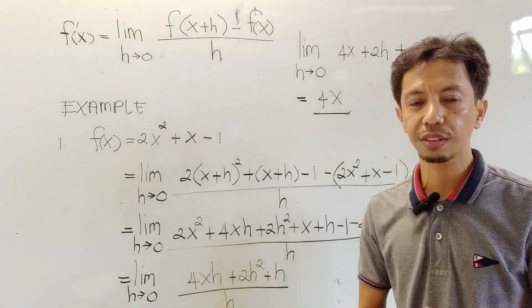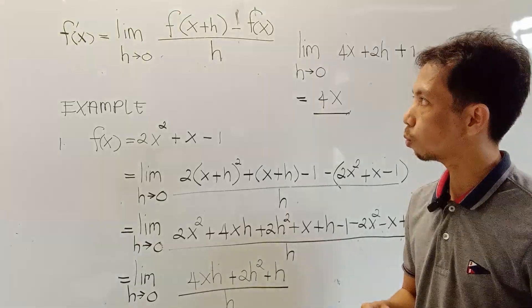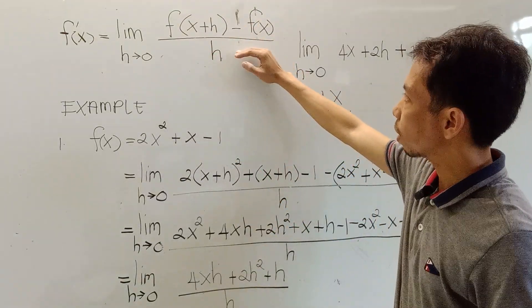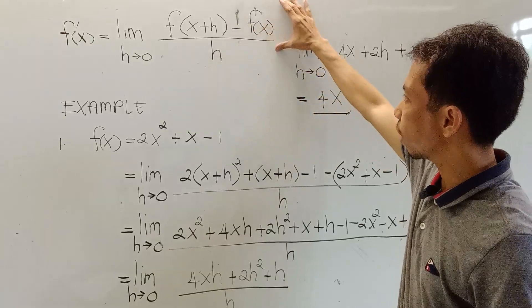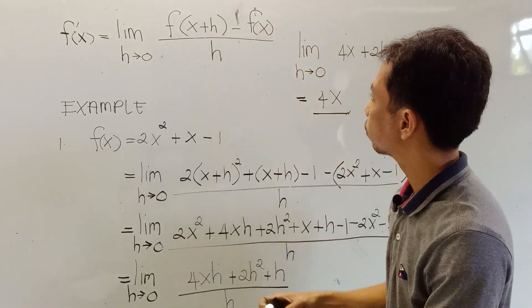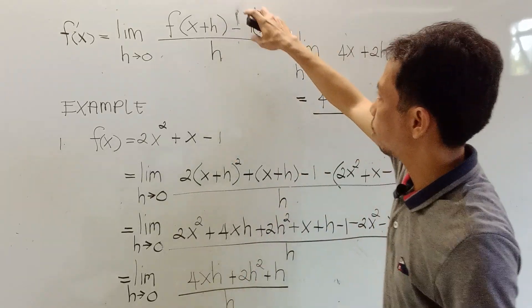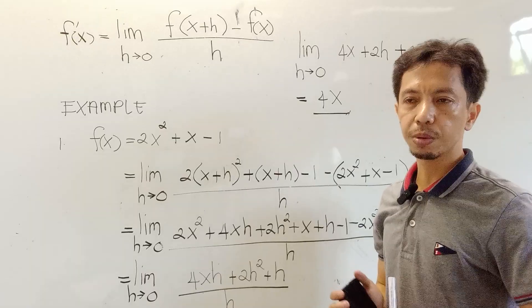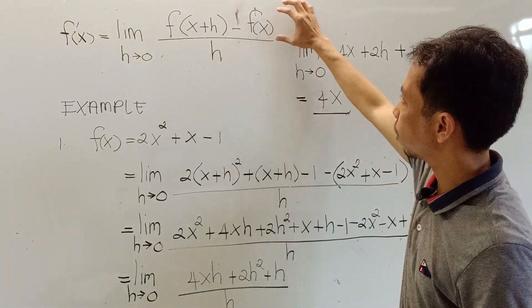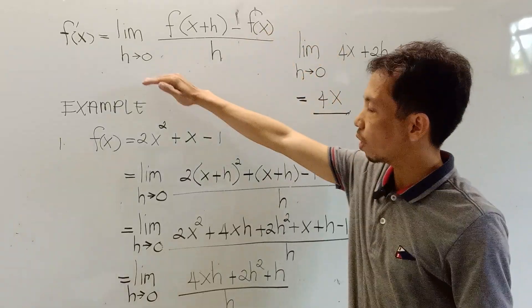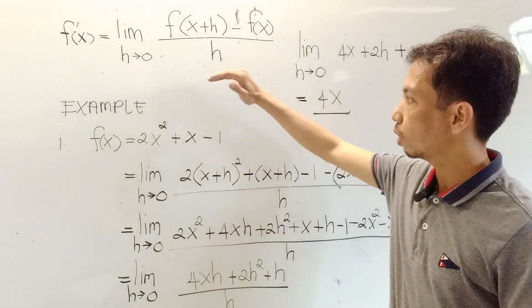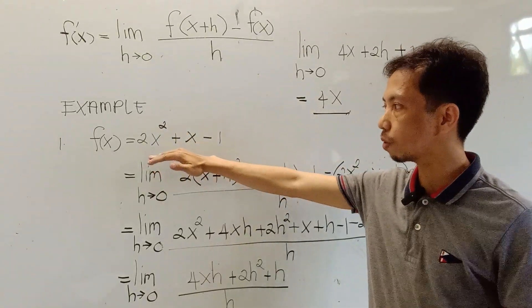The definition of limits says that in finding the derivative of a function, we will have the limit of f of x plus h, quantity x plus h, minus f of x, all over h, as h approaches 0. We are going to use this definition in finding the derivative of the function.